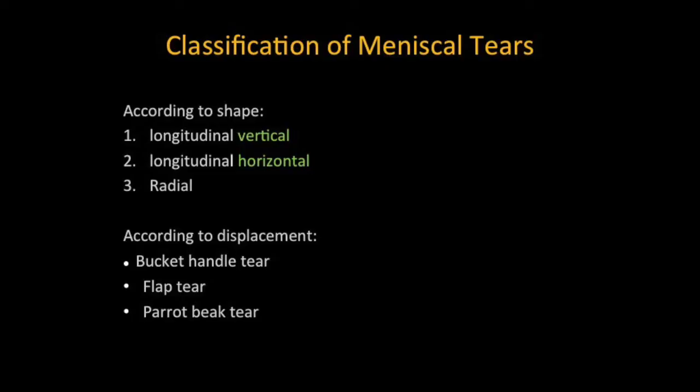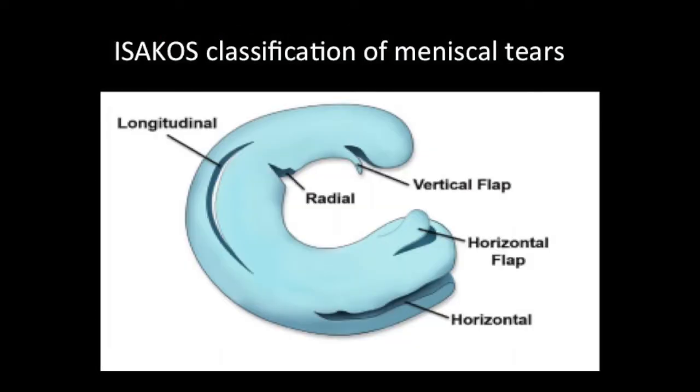Meniscal tears are classified according to shape into vertical, horizontal, and radial, and according to displacement into bucket handle, flap tears, or the displaced radial called parrot beak tear. This is the Isakos classification of meniscal tears with a pictorial depiction of the various kinds of tear.